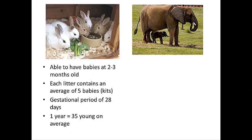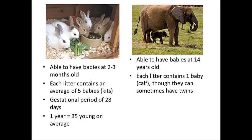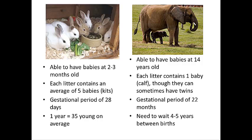On the other hand, an elephant has a much lower reproductive potential. They have to wait until they're 14 years old to reach reproductive maturity. Each litter contains only one baby — called a calf — though sometimes they can have twins. The gestational period is the longest of any mammal at 22 months, so it takes almost two years of carrying the baby before it's born. Then they need to wait four to five years between births, so in five years they've only created one or two young. The elephant clearly has a much lower reproductive potential than the cottontail rabbit.